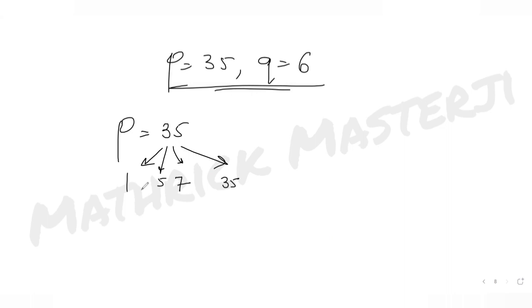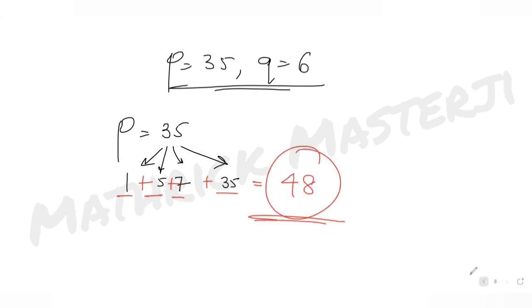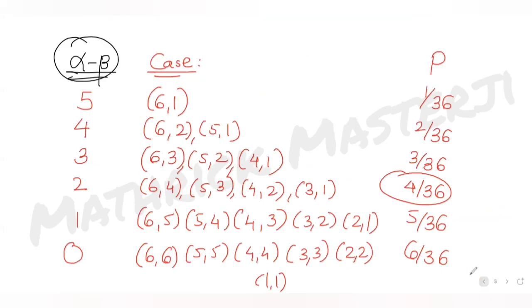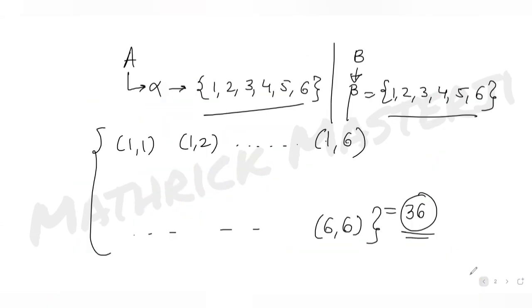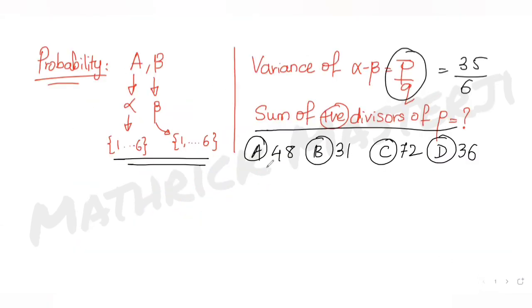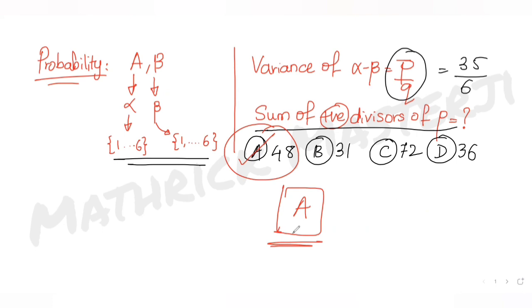Summing the positive divisors of 35: 1 + 5 + 7 + 35 = 48. The answer is 48, which matches option A. This is the correct answer for this question.